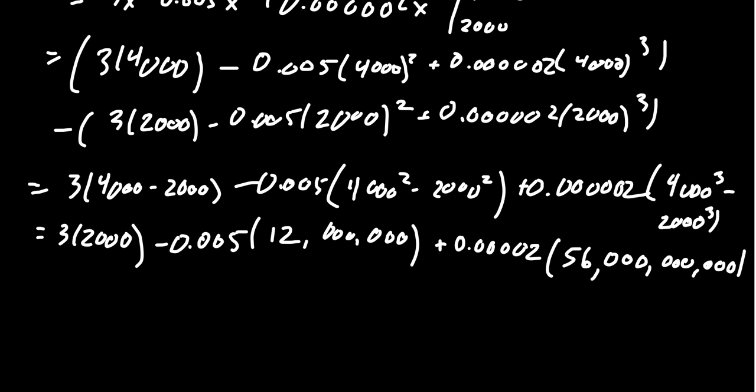And so then you can move some of these decimal places around. 3 times 2,000, of course, is 6,000. If you take 12 million times 0.005, that's actually going to give us negative 60,000. We can move the decimal place a little bit there.